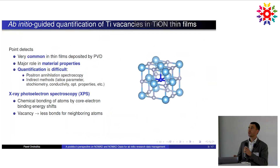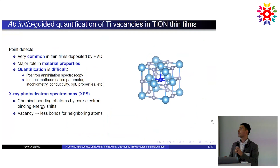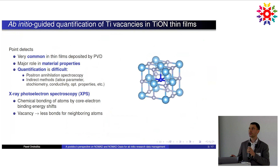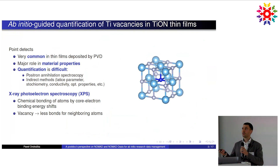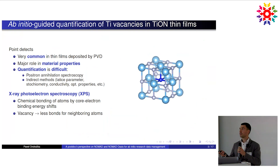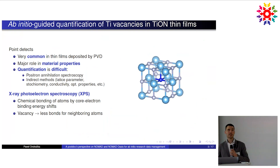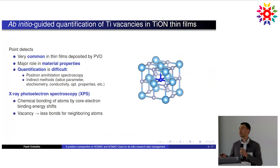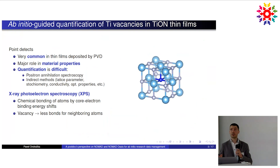I'll be talking about the ab initio guided quantification of titanium vacancies in titanium oxynitride thin films using X-ray photoelectron spectroscopy. I work with a lot of experimentalists who are doing thin films using PVD techniques like magnetron sputtering, and in such films they very often end up with point defects, and quantification of those is very difficult.